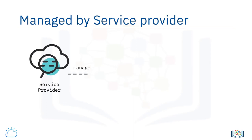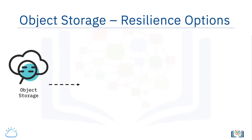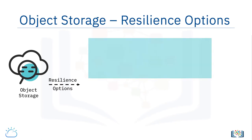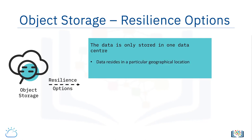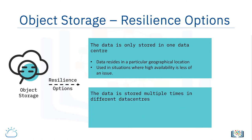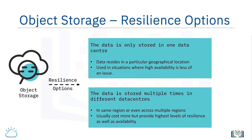The service provider also takes care of resilience and making sure that the object storage solution is highly available. Some cloud providers offer different types of buckets with different levels of resilience. For example, they offer buckets which are resilient but where the data is only stored in one data center — a good option where data needs to reside in a particular geographical location or where high availability is less of an issue. They will also offer buckets which are highly available across regions, where the data is stored multiple times in different data centers or zones in the same region or even in multiple regions. These options usually cost more, but they provide both the highest level of resilience as well as availability for your data.